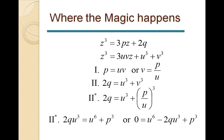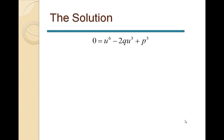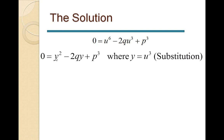We now have 0 = u⁶ - 2q·u³ + p³. This is actually a quadratic equation in disguise — it contains u⁶ and u³, so we substitute y = u³. This transforms it into: y² - 2qy + p³ = 0, which is a standard quadratic equation we can solve.